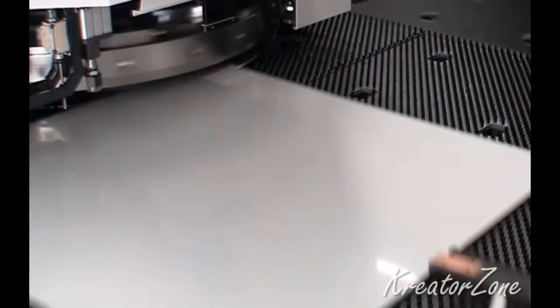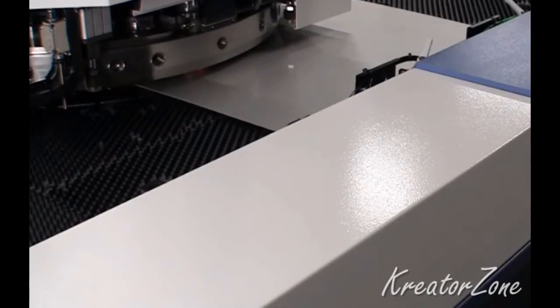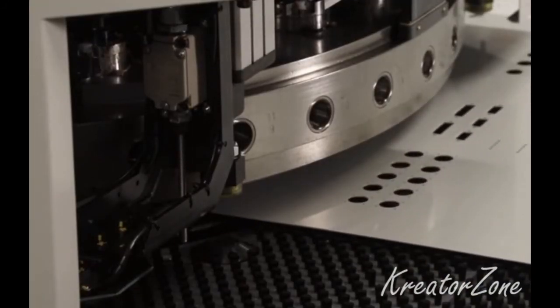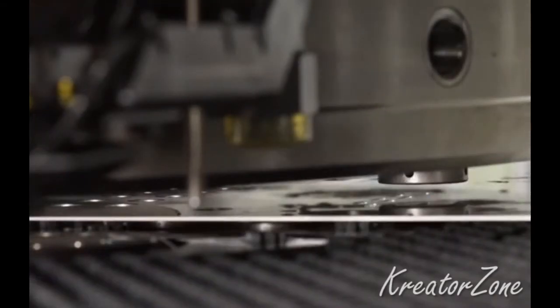Sheet metal punching is a cutting process in which material is removed from a piece of sheet metal by applying a great enough shearing force. CNC punching can be used to produce holes and cutouts of various shapes and sizes.